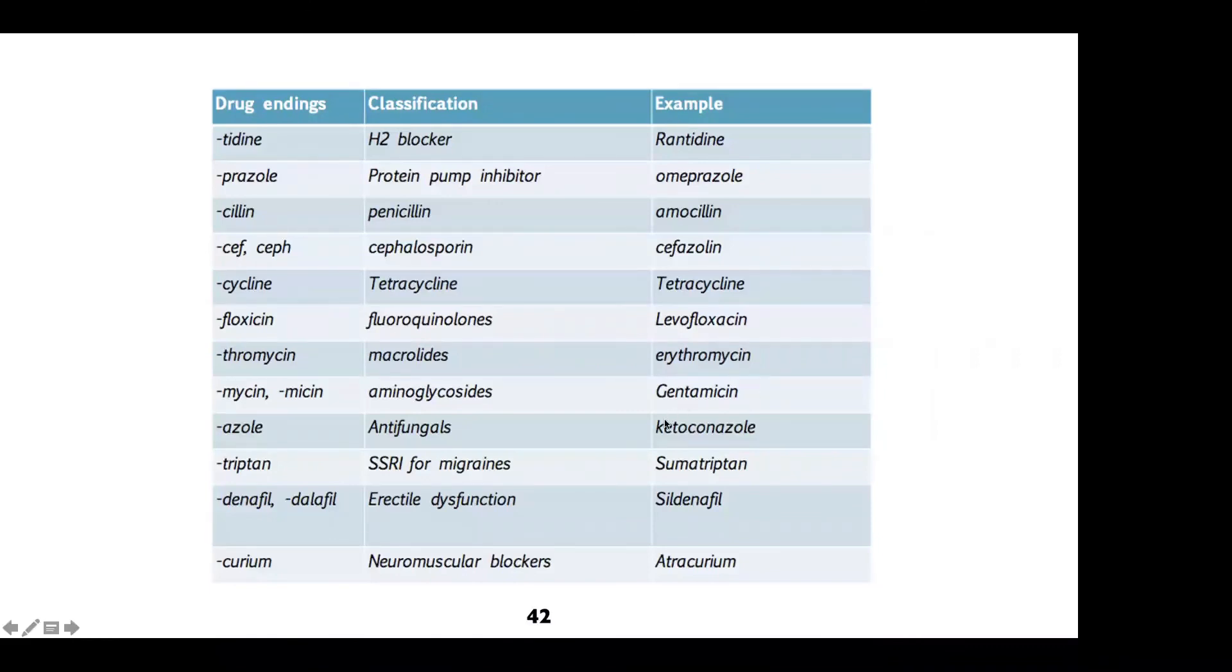Azole antifungals like ketoconazole. When you see triptan in a drug name, that usually means it's for migraines. If you see denafil or dolafil, that means that the drug is used for erectile dysfunction, like sildenafil, which is Viagra.